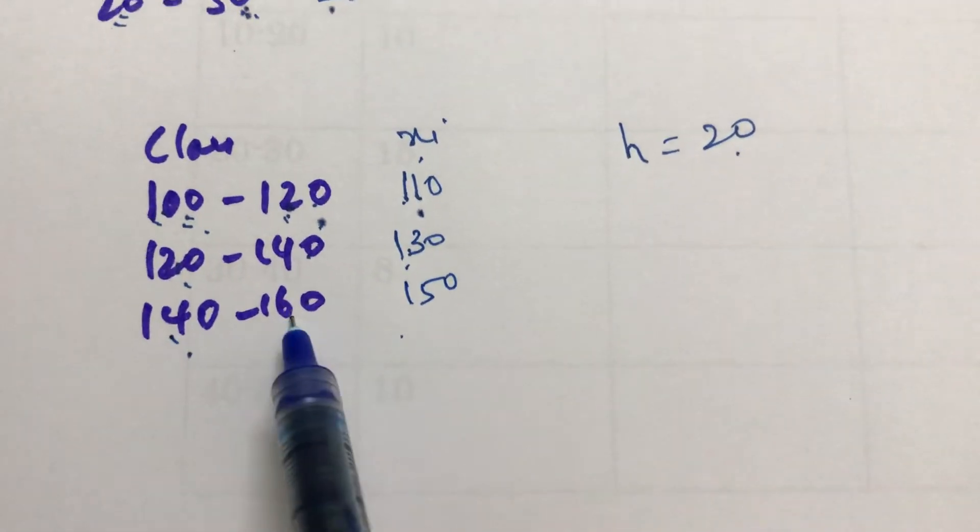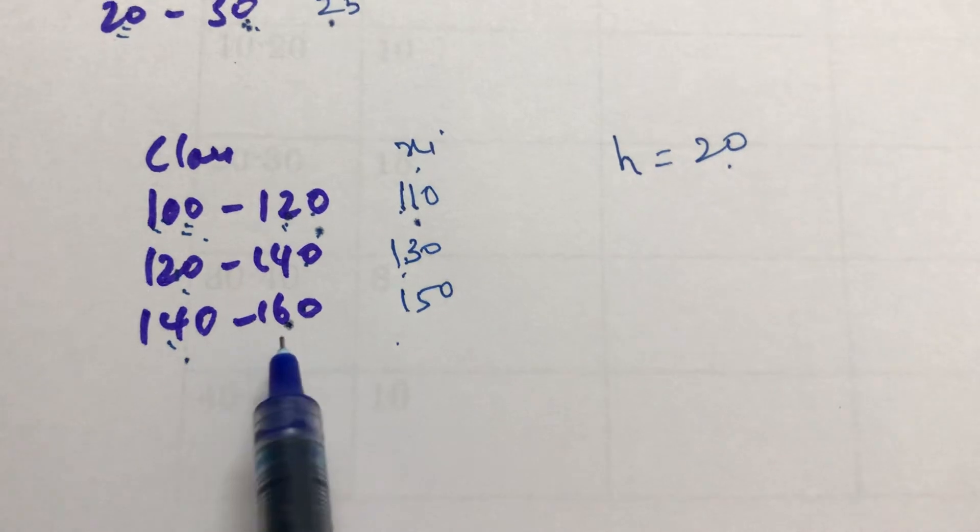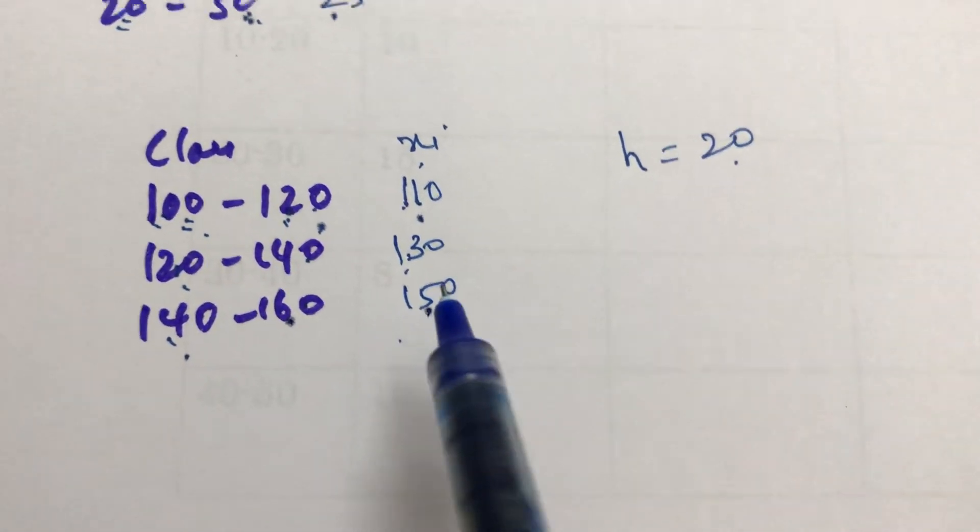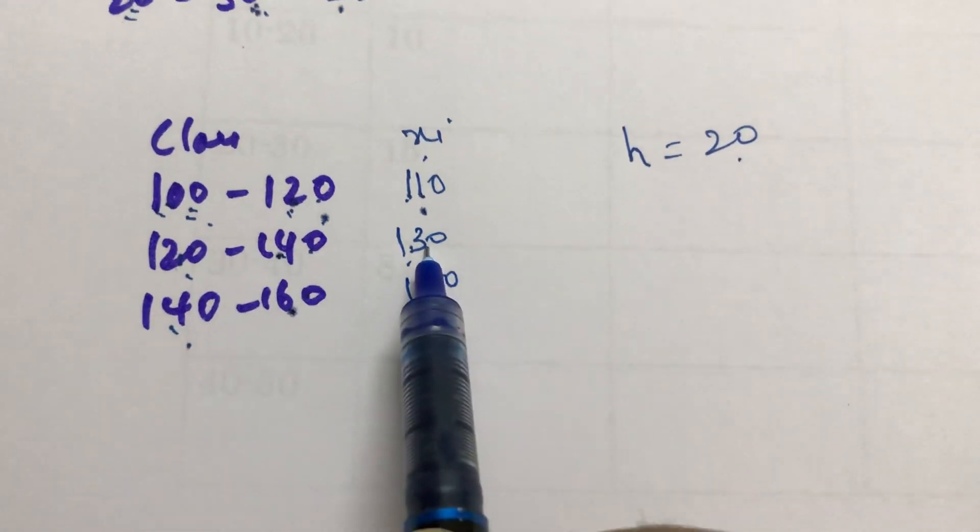If you want to check: 140 plus 160 is 300, 300 by 2 is 150. 120 plus 140 is 260, 260 by 2 is 130.